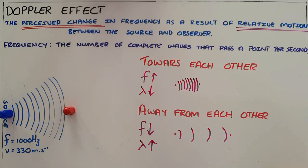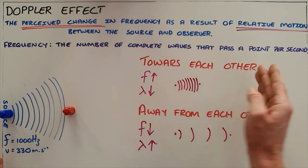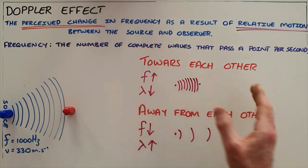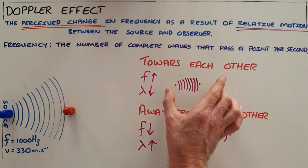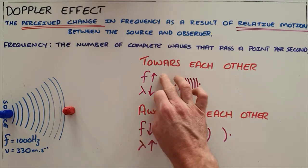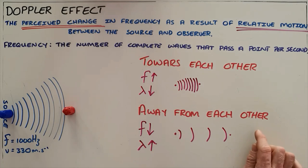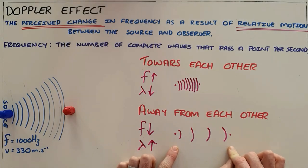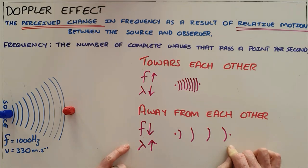So once again, the Doppler effect is a perceived change in frequency as a result of relative motion between the source and observer. When they move towards each other, the wavelength decreases and the frequency increases because those waves appear to compress and get closer together. When they move away from each other, the wavelength increases and the perceived frequency correspondingly decreases.